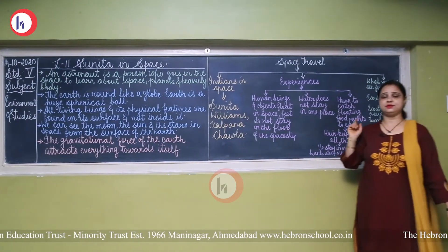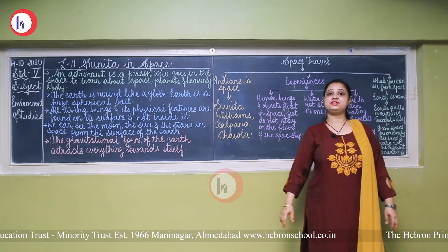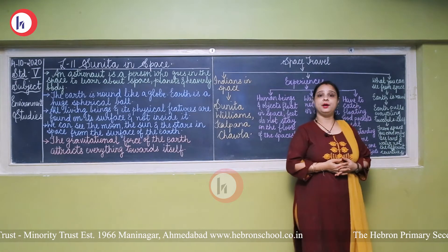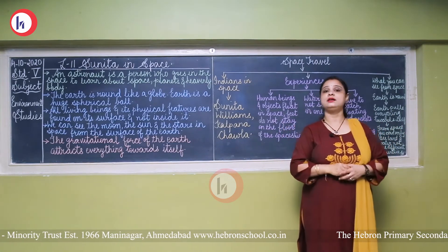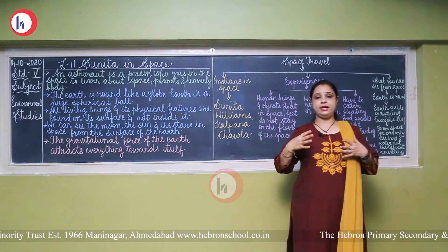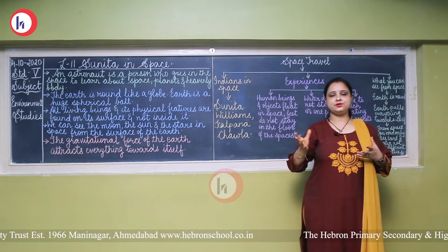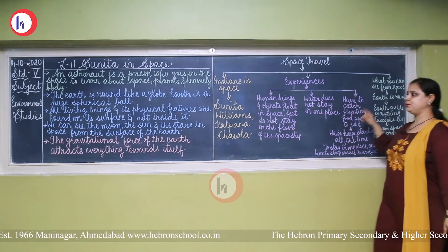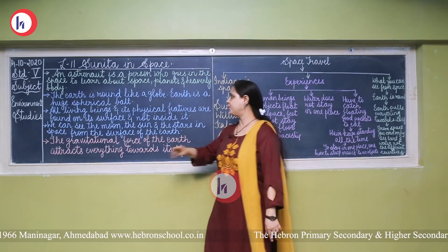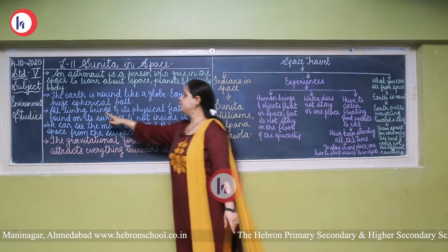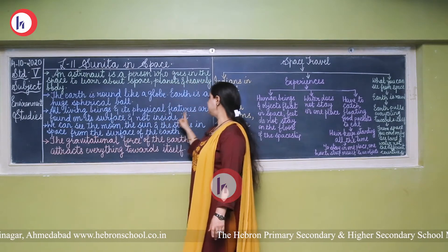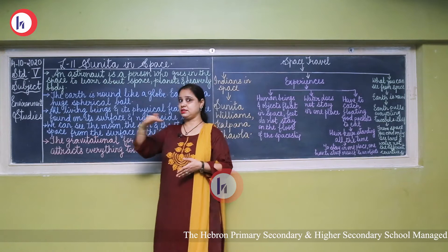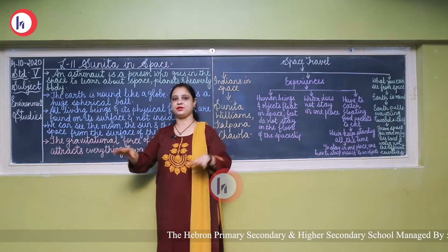From space, Sunita Williams described the earth. She says from space the earth looks so beautiful and amazing — one can sit for hours looking at it. They can see the seas and oceans, and greenery also from space. Earth is a huge spherical ball. All living beings and physical features are found on its surface. All human beings are on the surface of the earth, not inside it.